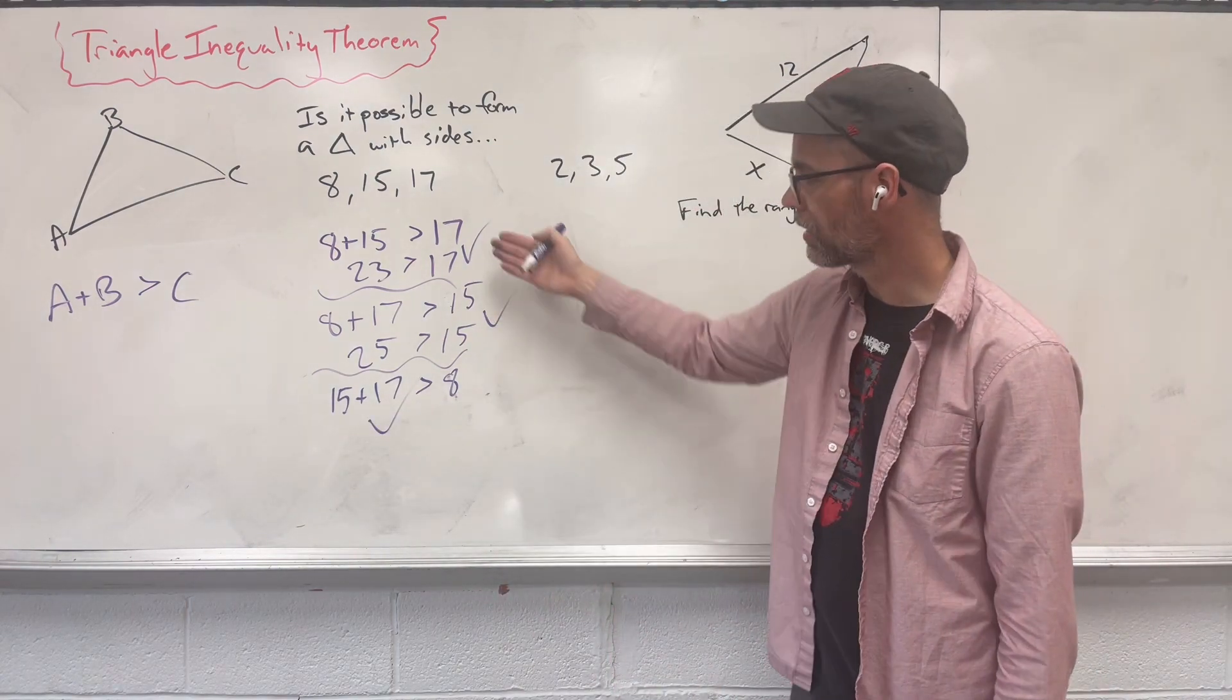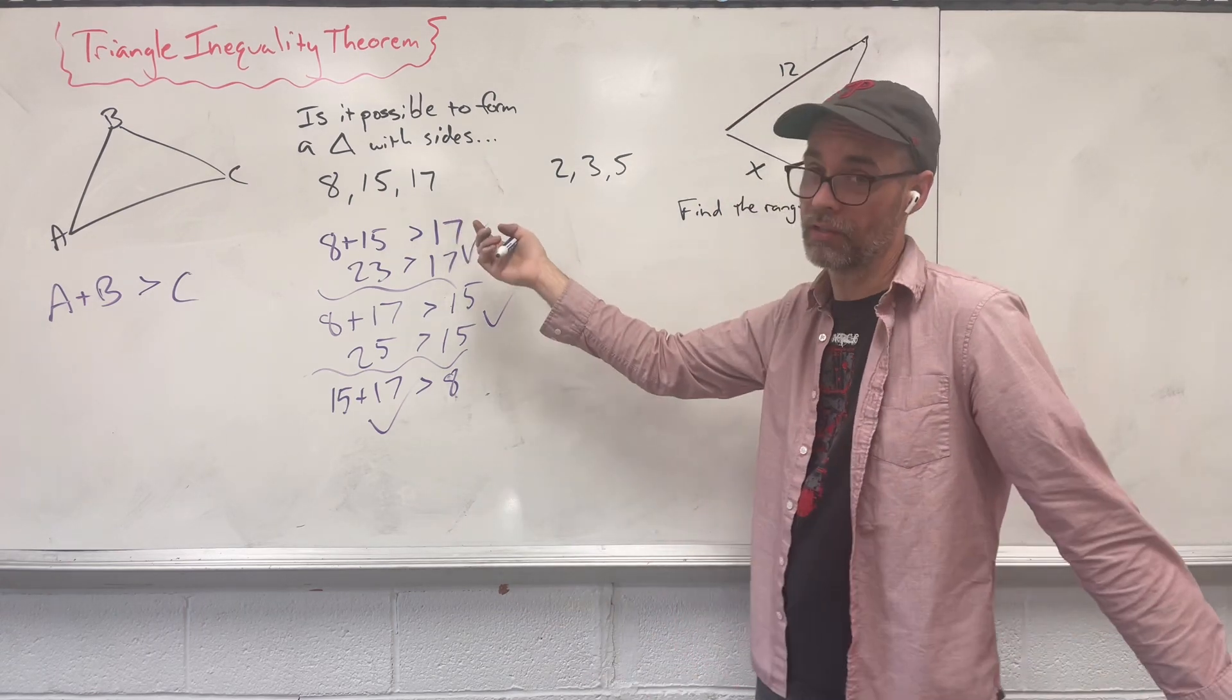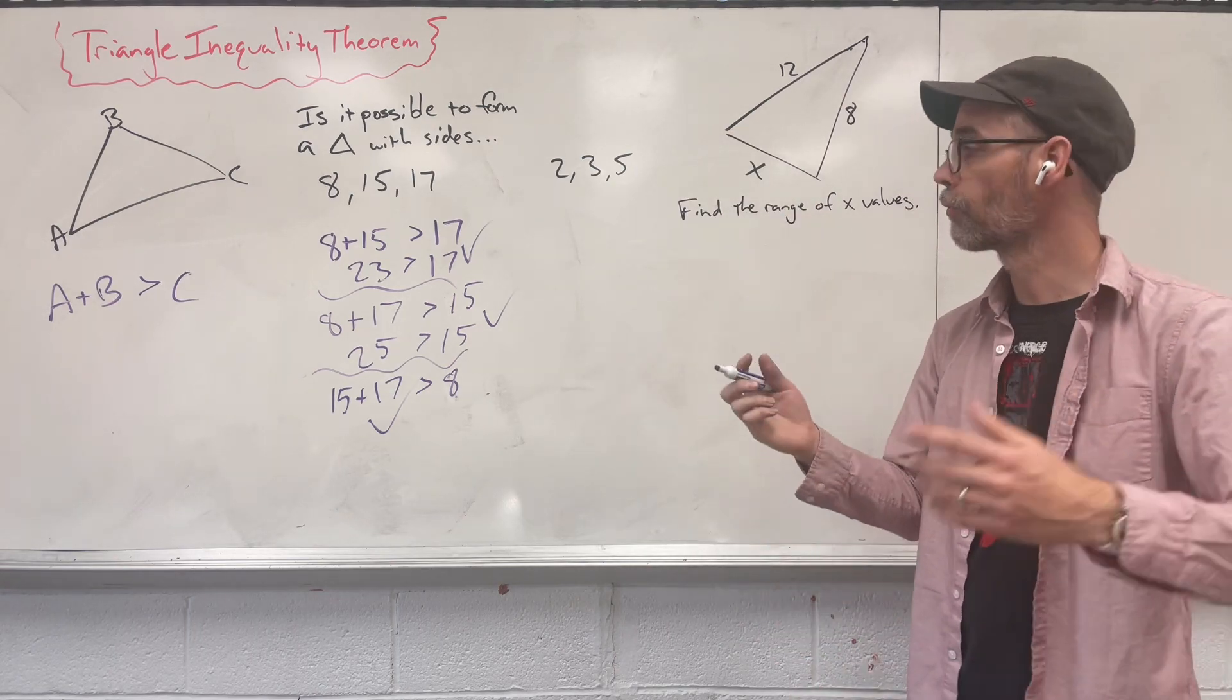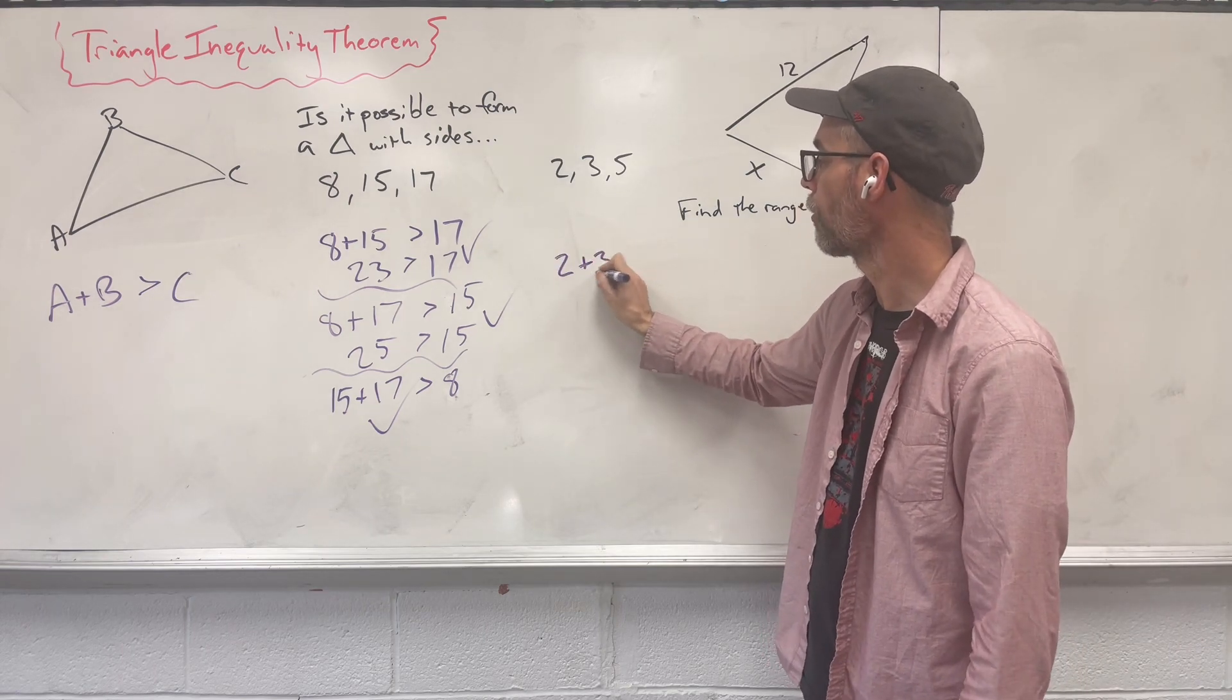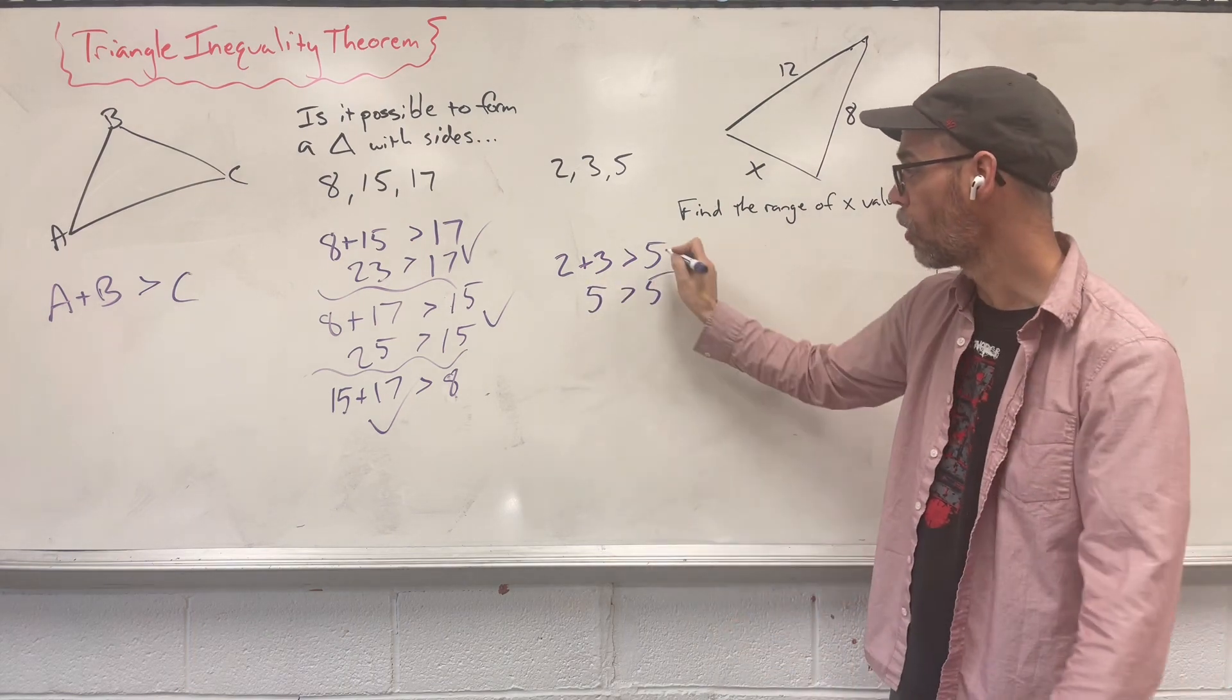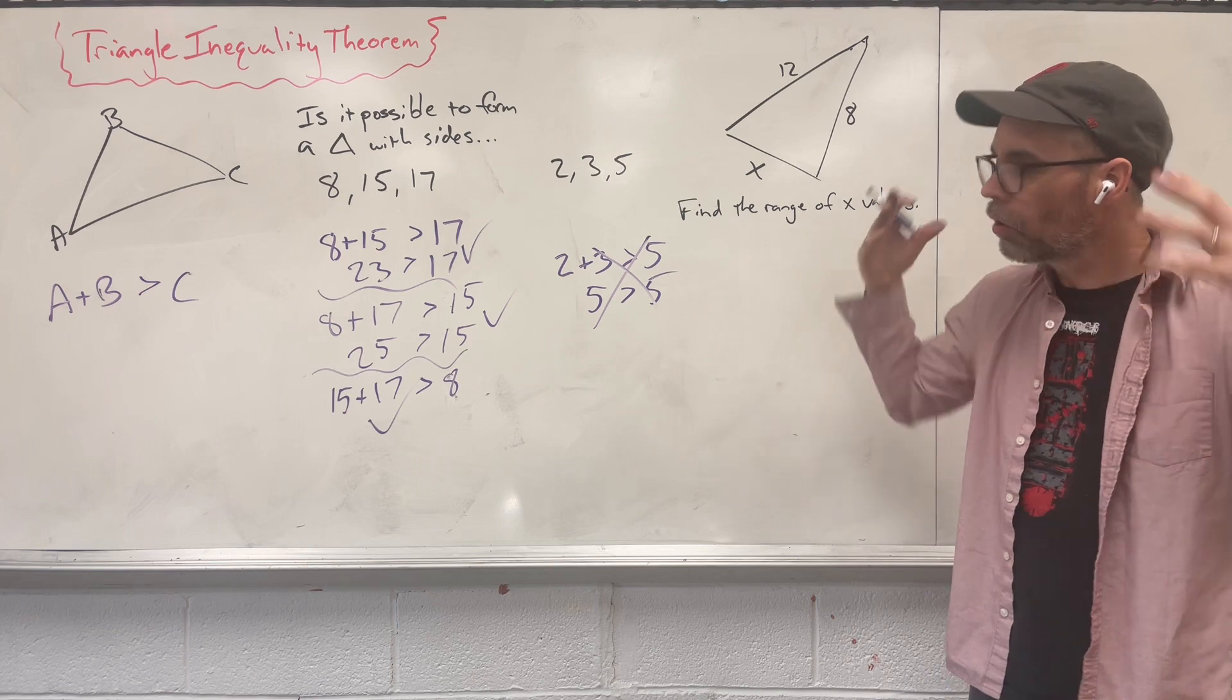Because each combination of two sides is larger than the third side, it's possible to have a triangle with these sides. Is it possible to have a triangle with sides 2, 3, and 5? Well, let's try our three combinations. We have sides 2 and 3. Is that larger than the third side? 2 plus 3 is 5. Is that bigger than 5? No. That statement does not make sense. These are equal, but not greater. So let's put this into perspective.